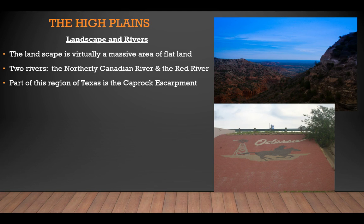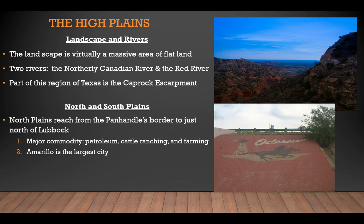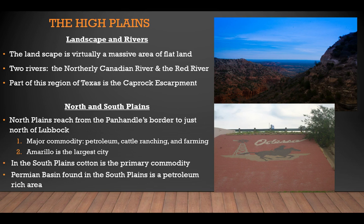In the north plains, the region reaches from the Panhandle border to just north of Lubbock. Major commodities in the area include petroleum, cattle ranching, and farming. Amarillo is the largest city. In the southern plains, cotton is the primary commodity. The Permian Basin, found in the southern plains, is a petroleum-rich area where the city of Odessa is located.